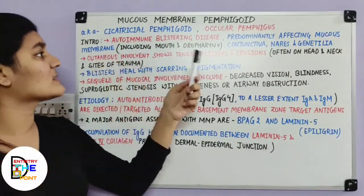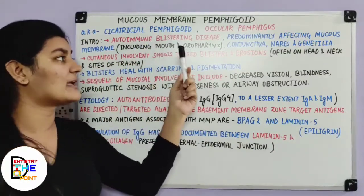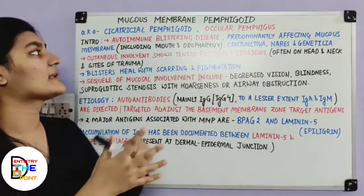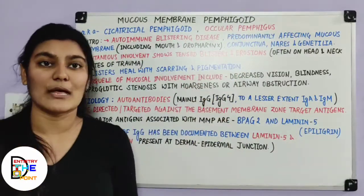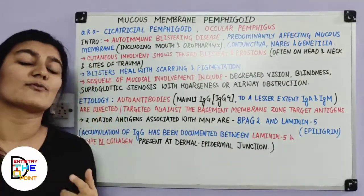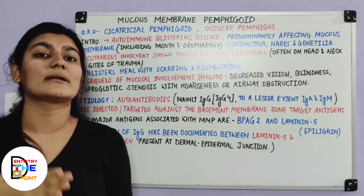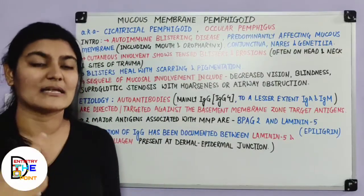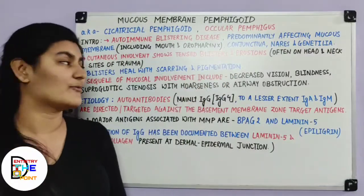The mucous membranes involved include your mouth, oropharynx, conjunctiva, nares, and genitalia. That is why it is also known as ocular pemphigus — because the conjunctiva of the eyes is commonly affected in mucous membrane pemphigoid along with the oral cavity.